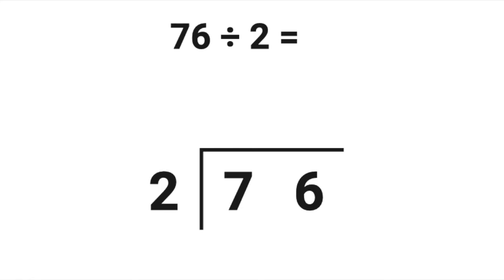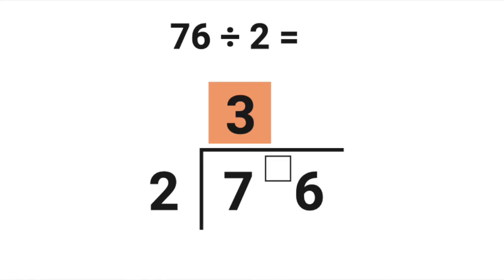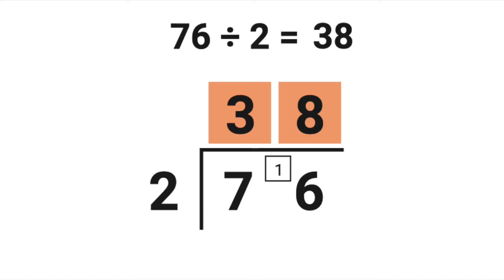Let's try another one. 76 divided by 2. Once we put those numbers in our grid, how many 2's are there in 7? 3. How many are left over? Since 2 times 3 equals 6, there is 1 left over. How many 2's are there in 16? 8, because 2 times 8 equals 16. Therefore, 76 divided by 2 equals 38.